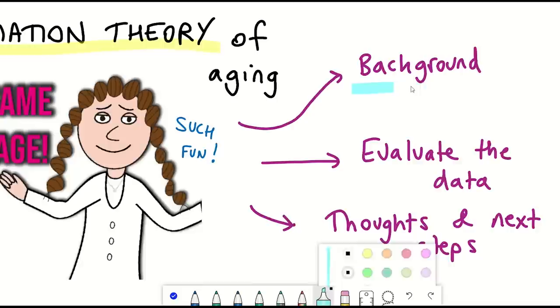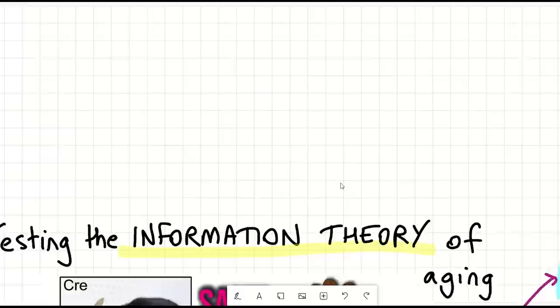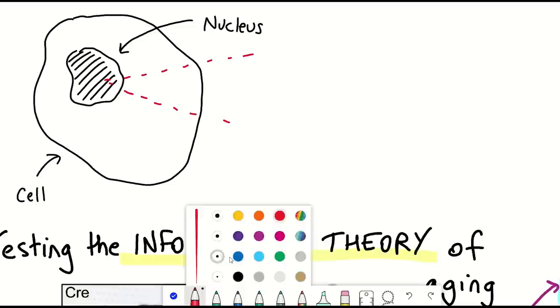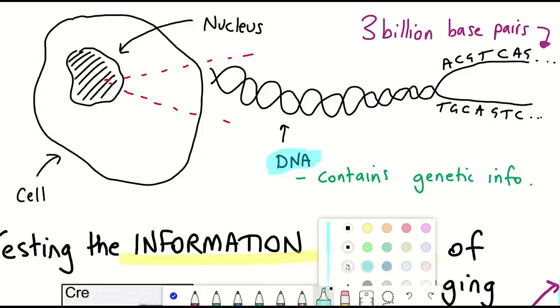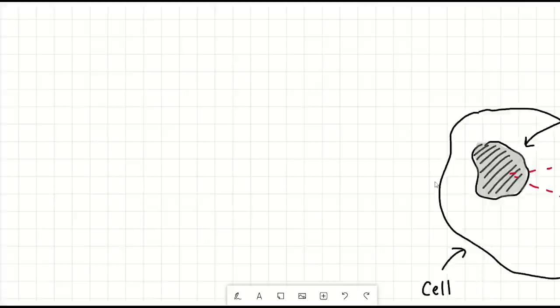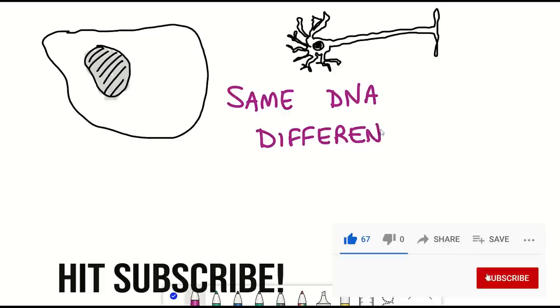The first thing we need to address is this information theory of ageing. The main question you're probably asking is: what information? The classical view of information storage within a cell is pinned to our genome — DNA — that contains all our genetic information, 3 billion base pairs of it. DNA being stable and easily accessed means our genetic information is by and large preserved as we go from a fertilised egg to a grown adult. But while our cells have the same DNA, our cells are different. That comes down to what genes are being expressed, by how much, and at what time.